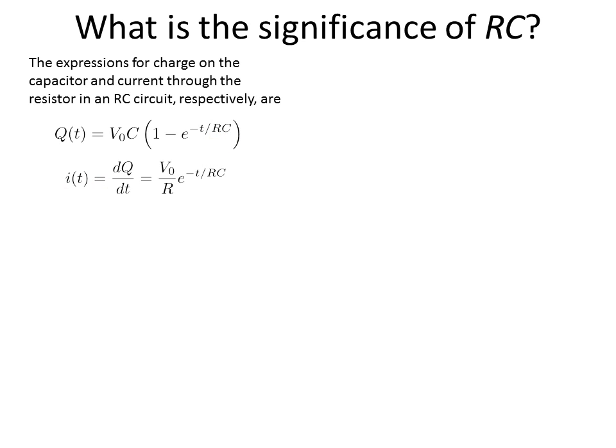Similarly for the current, we see that the current is given by V naught over R times the quantity e to the minus t over RC. Again this RC shows up, and actually if we notice in both equations this value of e to the minus t over RC shows up in both cases.